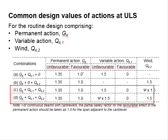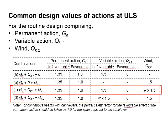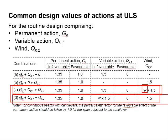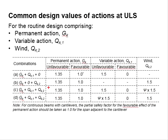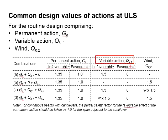The difference between the third and the fourth is the leading and accompanying variables. For condition C, the wind is considered as the accompanying variable, while for condition D, the variable actions are considered as the accompanying variables. You need to consider the favorable and unfavorable conditions. As for the favorable variable actions, there will be no factor of safety applied to the GK.